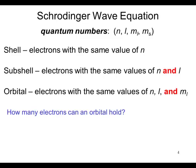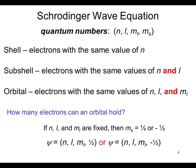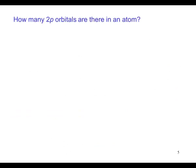How many electrons can an orbital hold? If n, l, and m sub l are fixed, then the only variable is m sub s. It can be plus one half or minus one half. An orbital can hold two electrons with opposite spin.